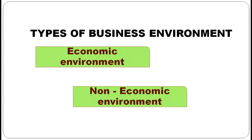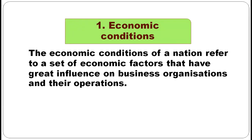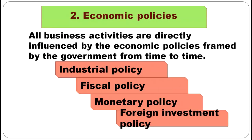Now moving to types of business environment. We have economic environment and non-economic environment. Economic environment includes economic conditions, economic policies, and economic systems. Economic conditions refer to the set of economic factors that influence business organizations and their operations. Economic policies — all business activities are influenced by economic policies framed by the government from time to time — include industrial policy, fiscal policy, monetary policy, and foreign investment policy.